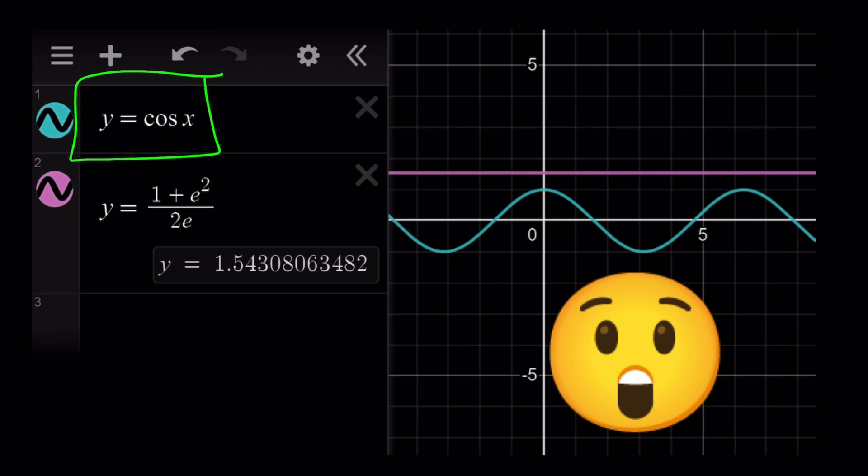First of all, consider y equals cosine x. What is the maximum value and minimum value for cosine x? If you are familiar with some trigonometric identities, you should know that cosine x is always between negative 1 and positive 1 inclusive. If you think about it in terms of right triangle trigonometry, the cosine of an angle is the adjacent side divided by the hypotenuse.